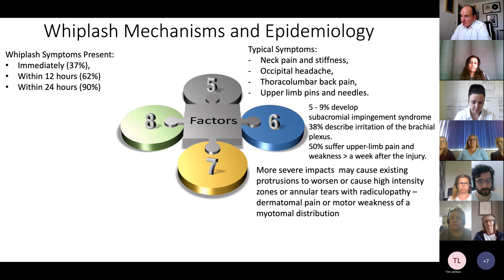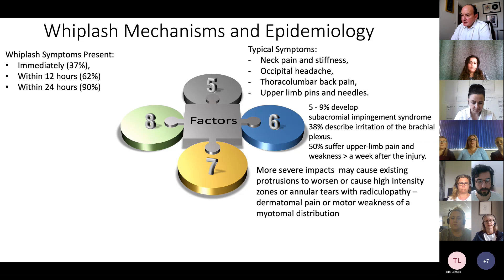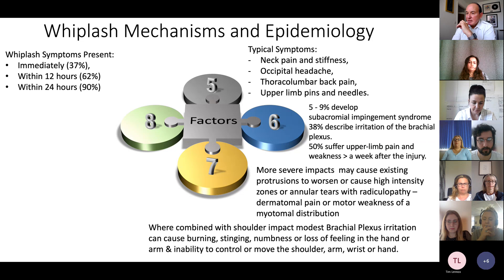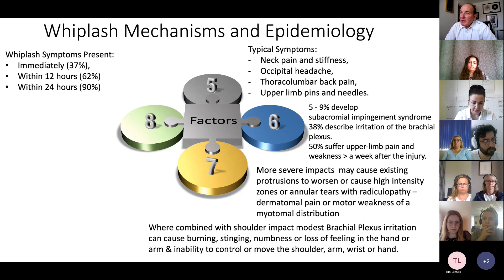5% to 10% develop subacromial impingement syndrome — pain apparently arising in the shoulder. 38% describe irritation of the brachial plexus, which is the nerves as they amalgamate in and around your clavicle. 50% have upper limb pain associated with weakness, but that only develops about a week after injury. In more severe impacts, you may get protrusions or high intensity zones, or annular tears with nerve root irritation — radiculopathy — producing pins and needles in a pattern that we as physicians would expect for a given nerve, and motor weakness of a predictable myotomal distribution.